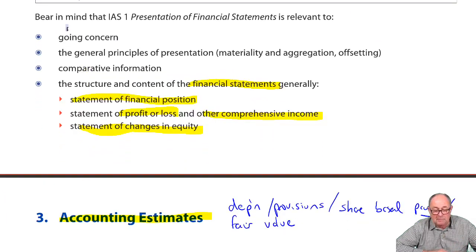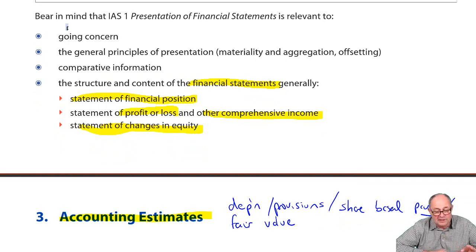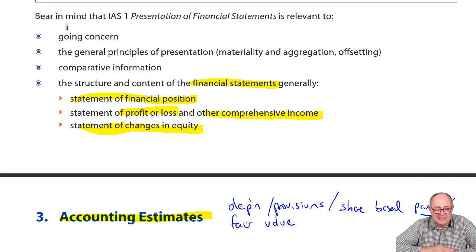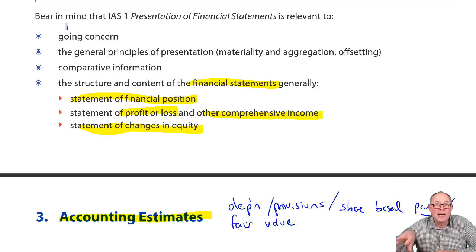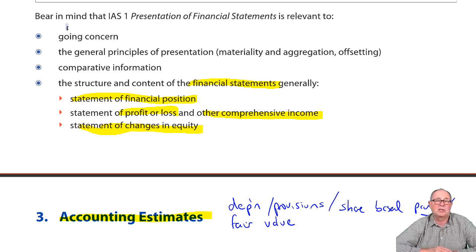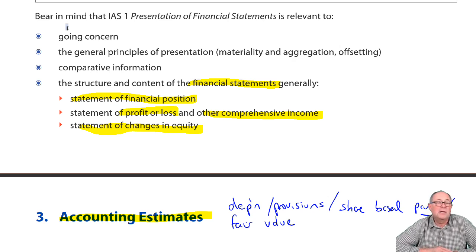There's a useful pointer at the bottom of the page: if you understand for any of those standards what's in the statement of financial position, what's in P&L, and what's in OCI, you're probably well on the way to understanding. So if you take something like defined benefit pensions — if you know that the pension asset and liability is in the SFP, that service cost and net interest cost is in the P&L, and the remeasurement differences are in OCI — you don't need to worry about calculating them, but you've got about the right level of knowledge.